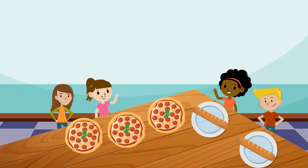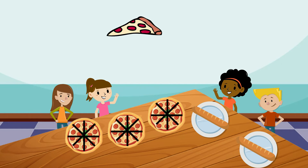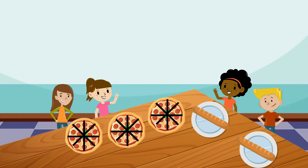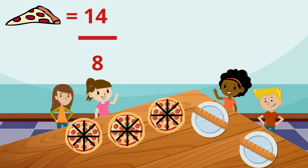Let's go back to Lisa for another example. Lisa and her friends had already eaten 7 slices from the first pizza. Lisa and her friends came back and ate 7 more slices. How many slices in total have they had? 14! Great job! If 14 slices have been eaten, the fraction that represents the total number of slices eaten would be 14 eighths. 14 eighths is an improper fraction as the numerator is larger than its denominator.